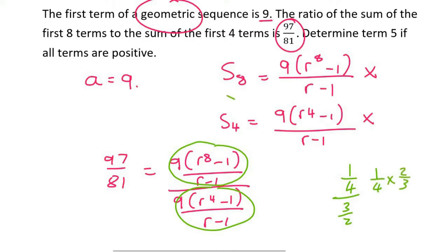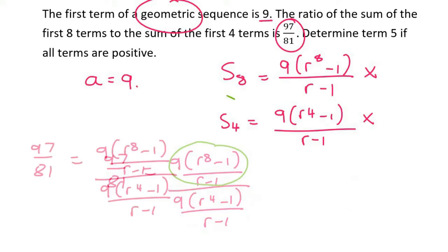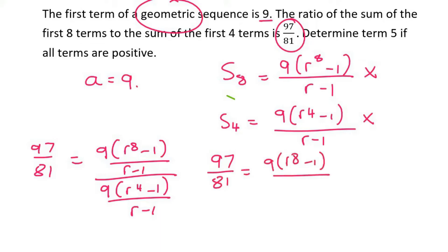Well, let's try that now. I think some things might cancel out. So it's going to be 97 over 81 equals 9 and then (R^8 minus 1) over (R minus 1) times by (R minus 1) over 9(R^4 minus 1).